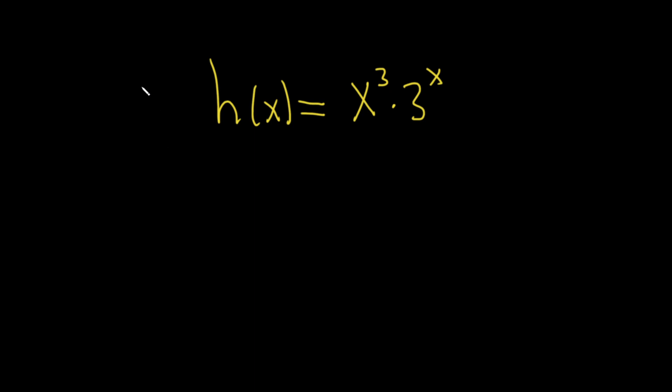So because we have a product, we're going to use the product rule from calculus. Recall the product rule says if you have a function f times a function g, and you want the derivative of this product, think of f as your first function and g as your second function. And it's the derivative of the first times the second plus the first times the derivative of the second.